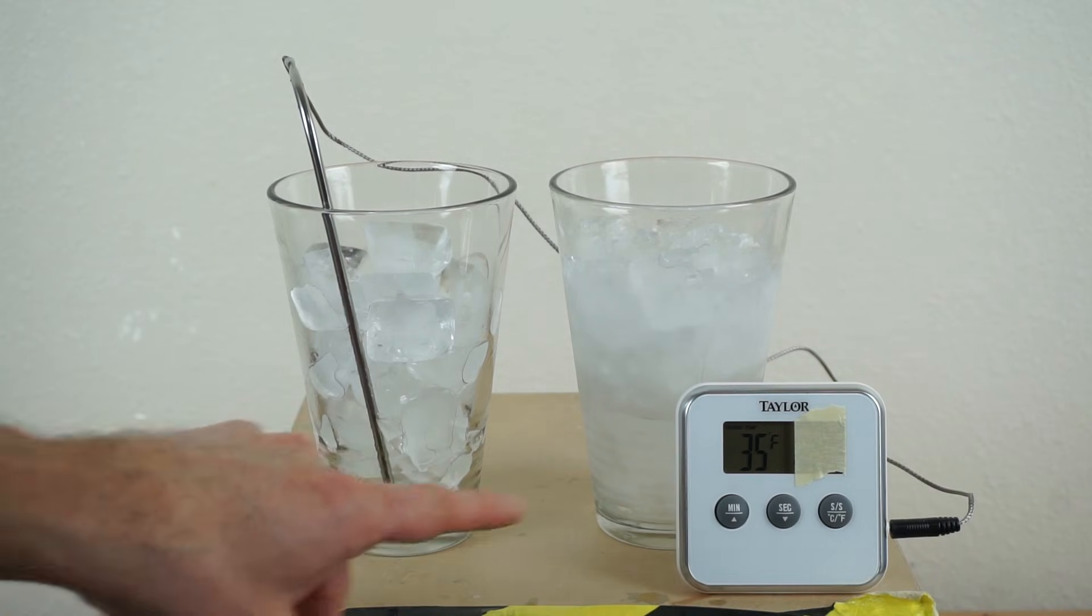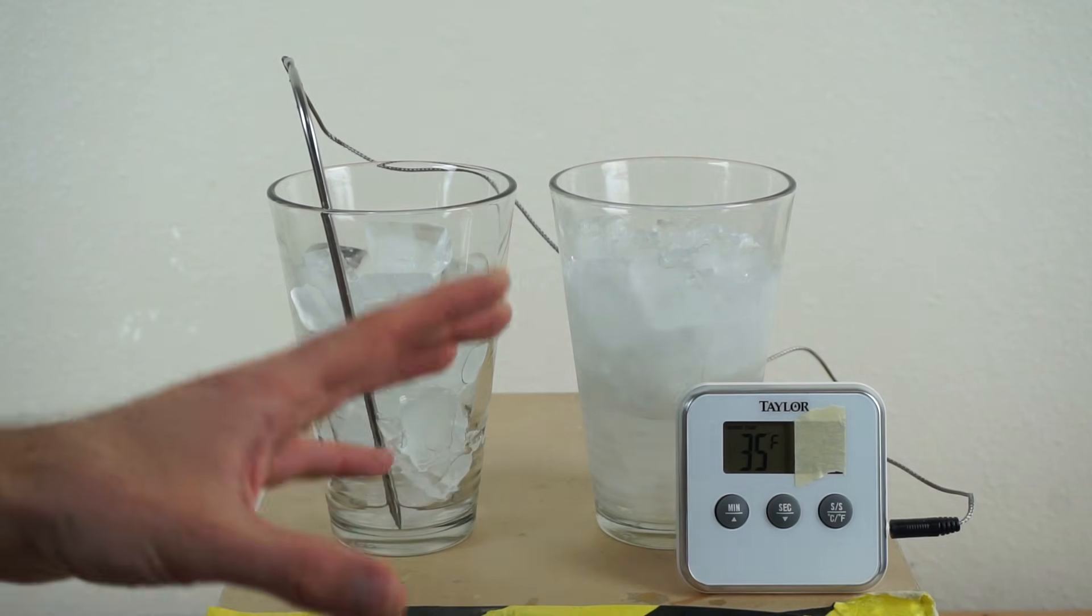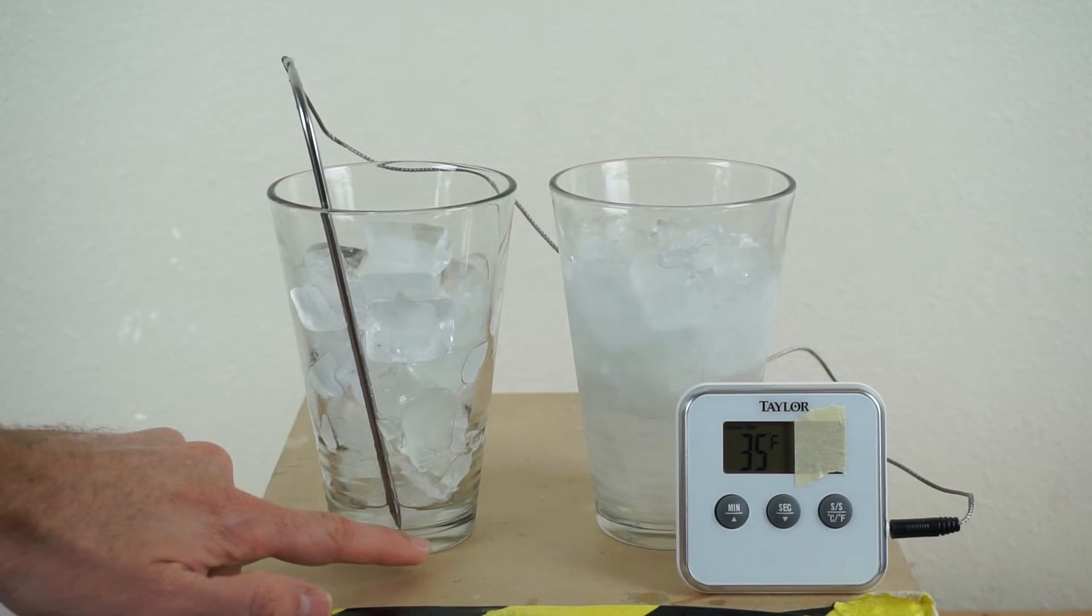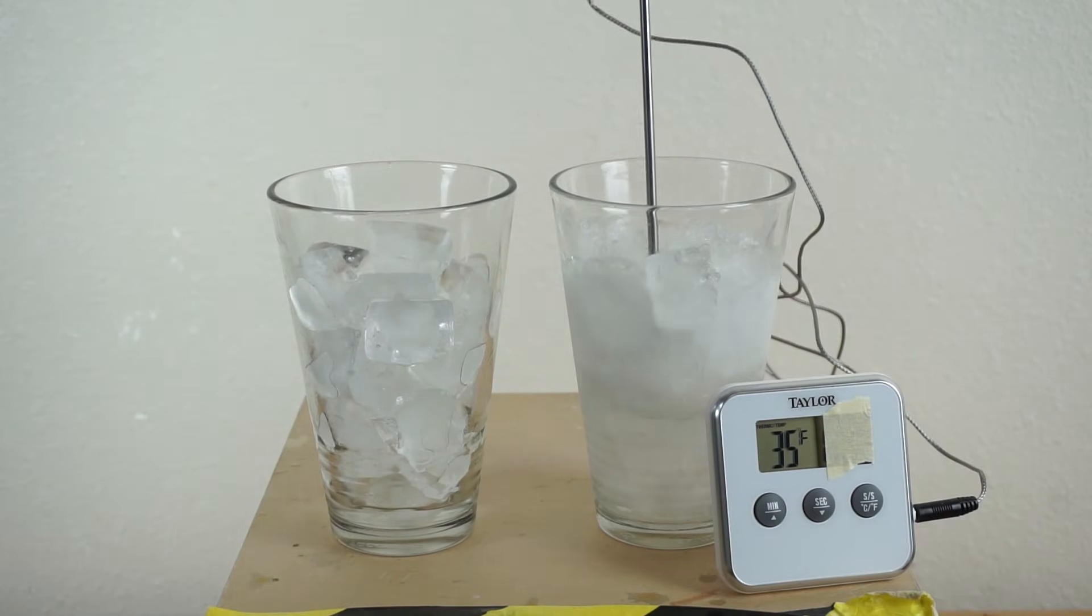So this water in the non-salt cup is showing around 35 degrees Fahrenheit. It should be about 32 degrees Fahrenheit, but because it's on the bottom of the cup, the cup is a little bit warmer so it's heating it up a little more. Now let's see what the salt water cup is.